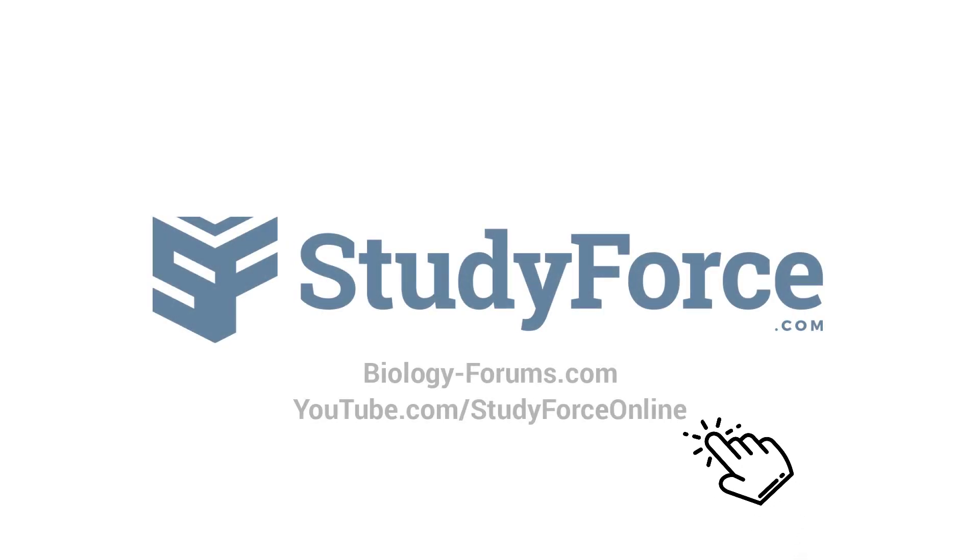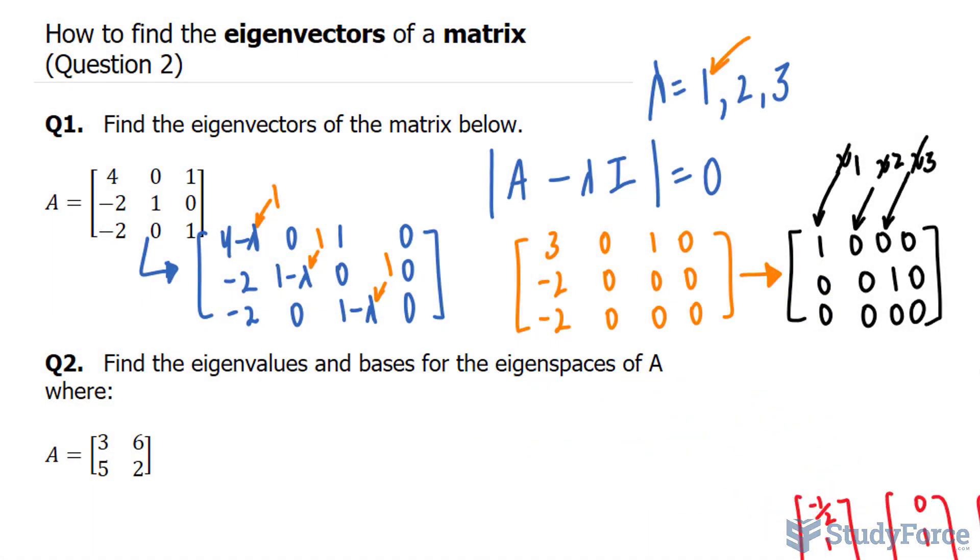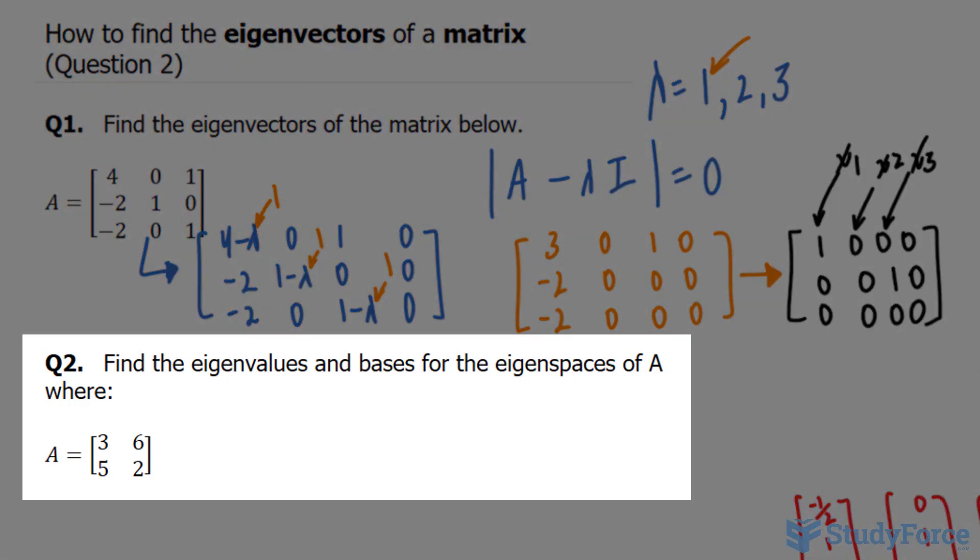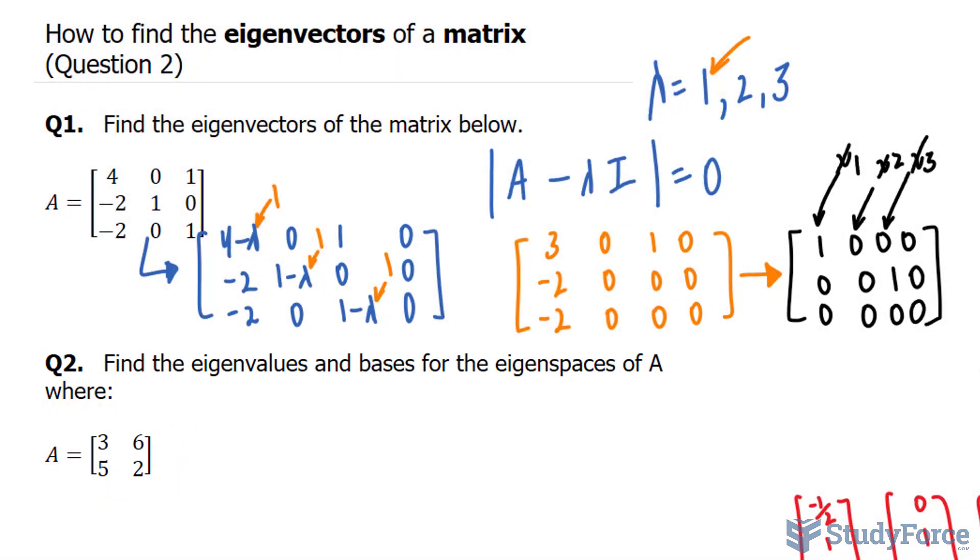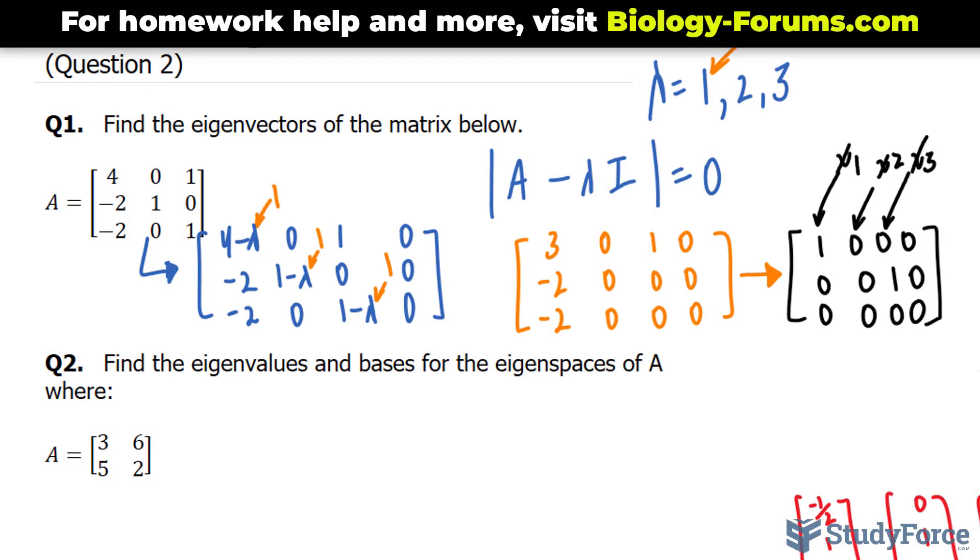Welcome back to question 2 of this series, and once again we'll be finding the eigenvectors of a matrix. In question 2 we're asked to find the eigenvalues and bases for the eigenspaces of matrix A, where matrix A is a 2 by 2 matrix. So unlike in question number 1, I'll be going through the whole process step by step, starting with finding the eigenvalues.